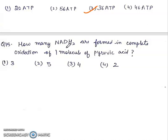Question 15: How many NADH2 are formed in complete oxidation of one molecule of pyruvic acid? 3, 5, 4, or 2? Right answer will be third, 4.